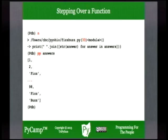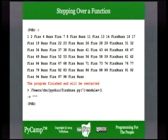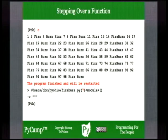We can pretty-print the answers and see that the fizzbuzz function returned a list — the first 100 answers to the fizzbuzz game. That next statement will join up a string version of all those elements separated by a single space and print the resulting string to the console. When you execute it, you see all those answers — the numbers divisible by 3 are substituted with 'Fizz', numbers divisible by 5 with 'Buzz', and ones divisible by 15 with 'FizzBuzz'.